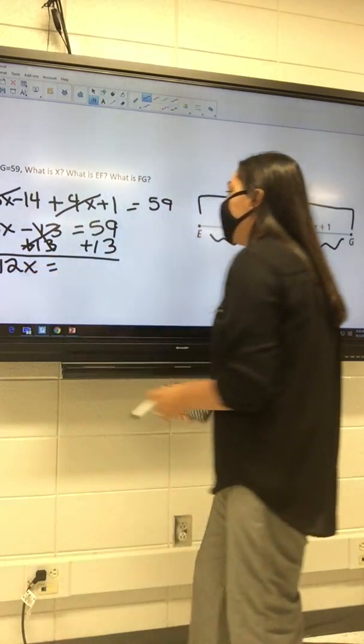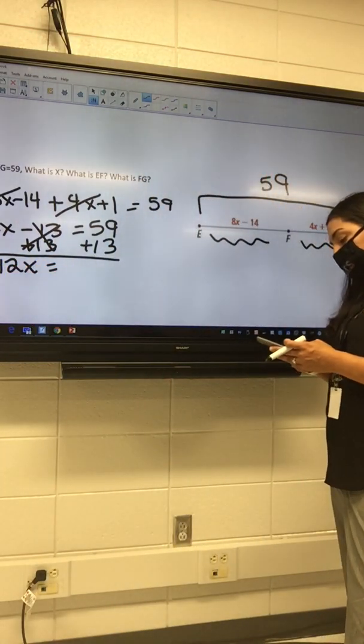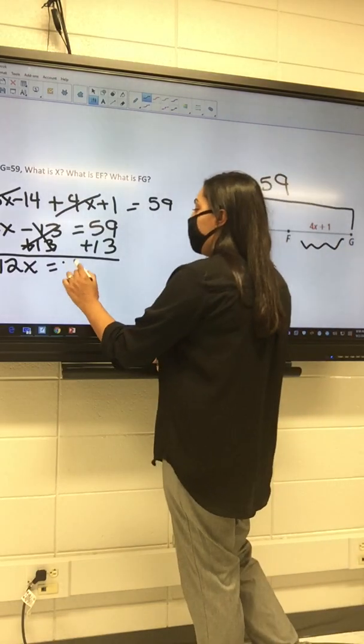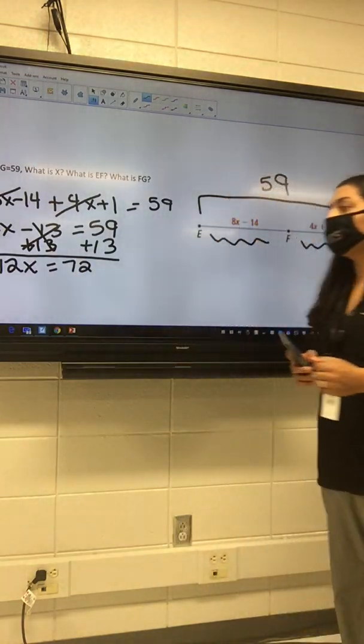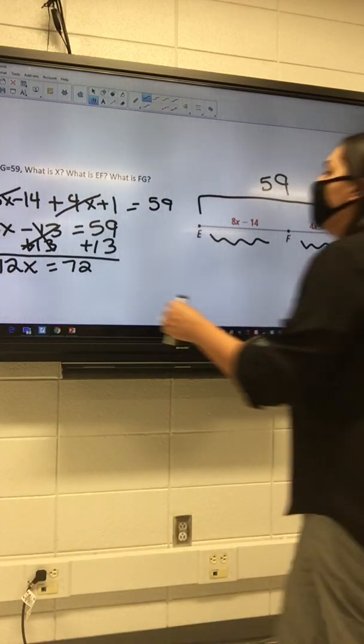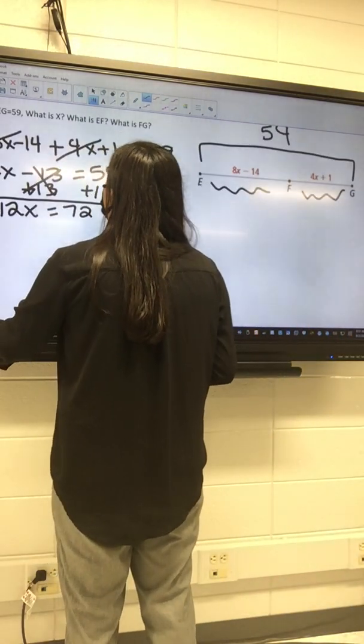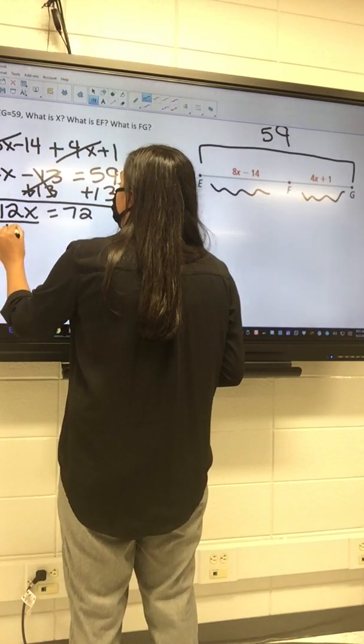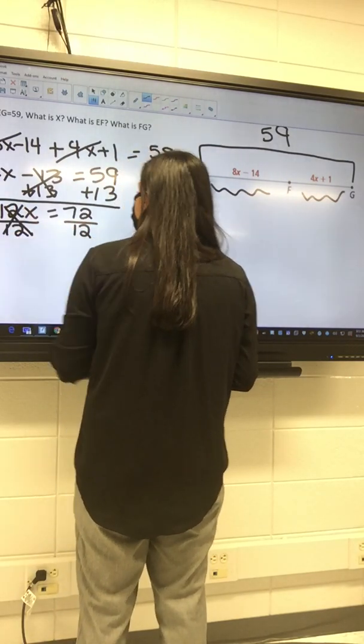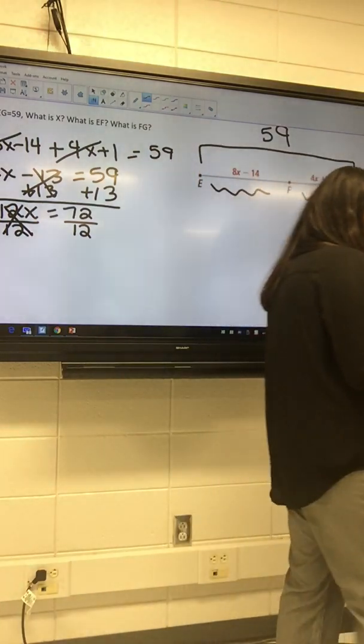12x equals, and I got 59 plus 13. Let me check if I can, my math is not the greatest today. Okay, 72. Now what? I got 12x equals 72. Divide by 12. If I do it to one side, I gotta do it to the other side. So x equals 72 divided by 12, which is 6.